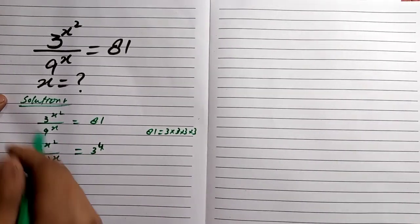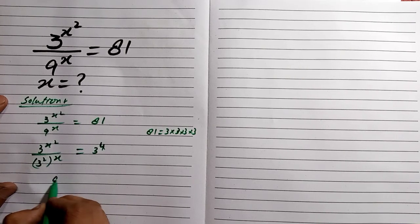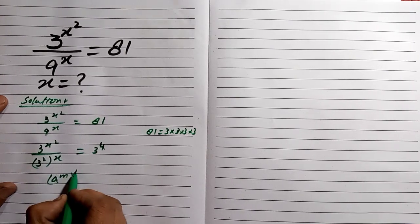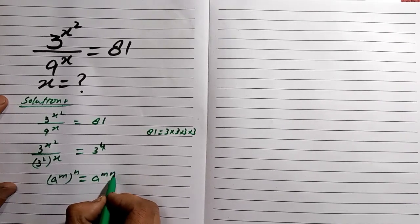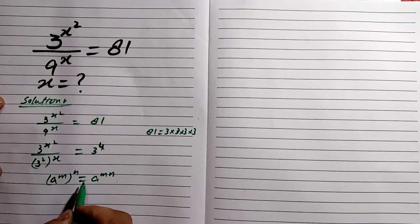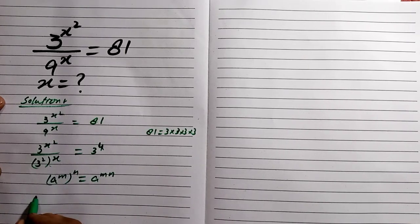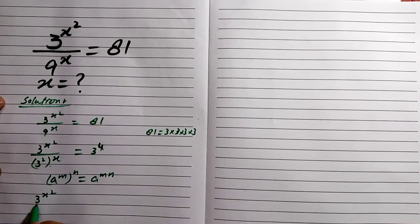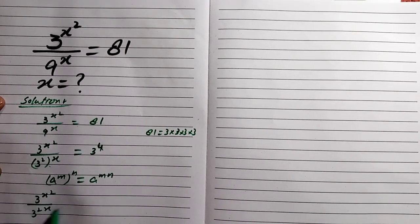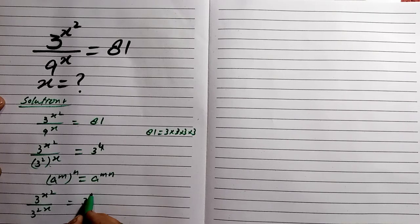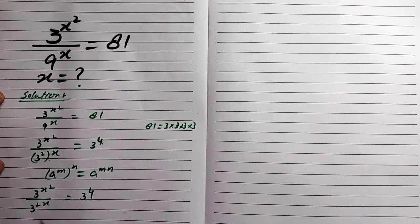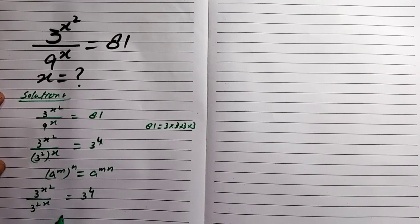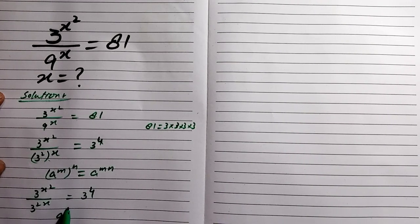In this equation we can use the exponent rule a^(mn) which is equal to a^(mn). So we can use this rule, giving us 3^(x²) divided by 3^(2x) which is equal to 3 to the power 4.